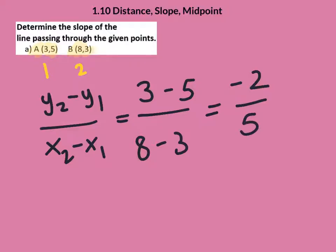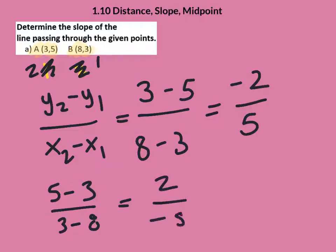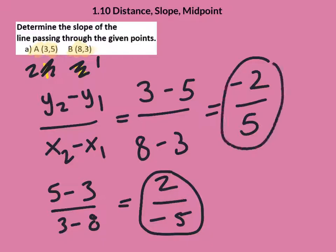Now maybe just to show you what would happen if I went up there and I changed those. So let's make this point number two and this one point number one. So the Y change would be five minus three and the X change would be three minus eight. This gives me two over negative five. Now actually, those are identical answers, aren't they? So my point to you is it does not matter who's point one and point two.